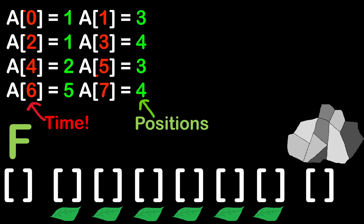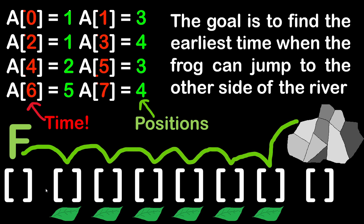At zero seconds and at two seconds, two leaves are falling at the same position, which is position number one. So we will have two leaves at the same position, and this doesn't cause any additional issues regarding our solution. The goal is to find the earliest time when the frog can jump to the other side. For this to happen, we need leaves in all positions separating the frog from its destination. If we conclude there is a missing leaf, our function should return minus one.